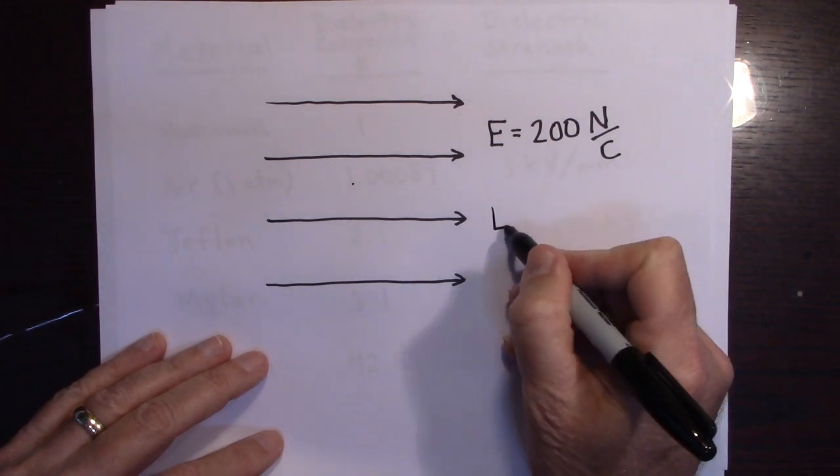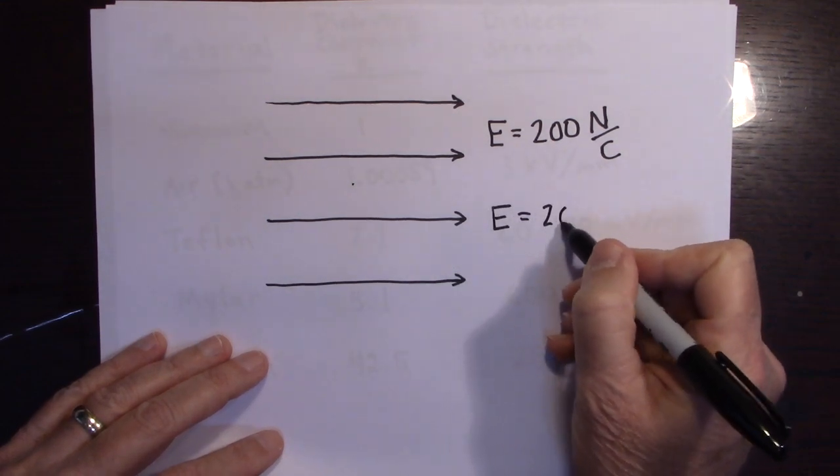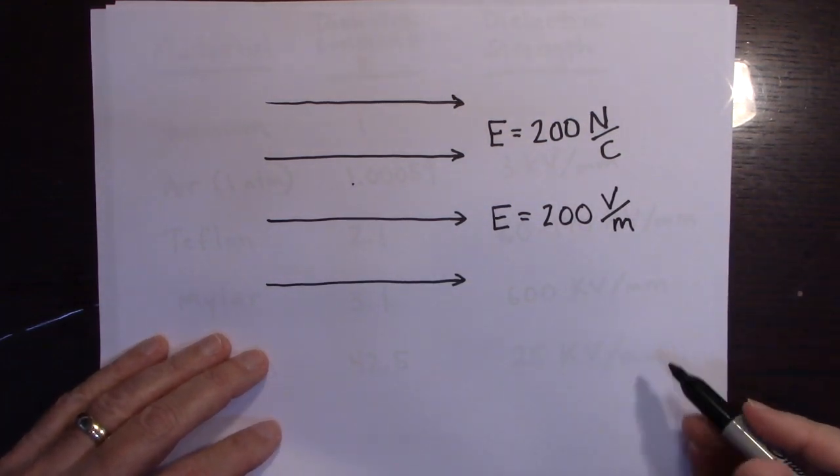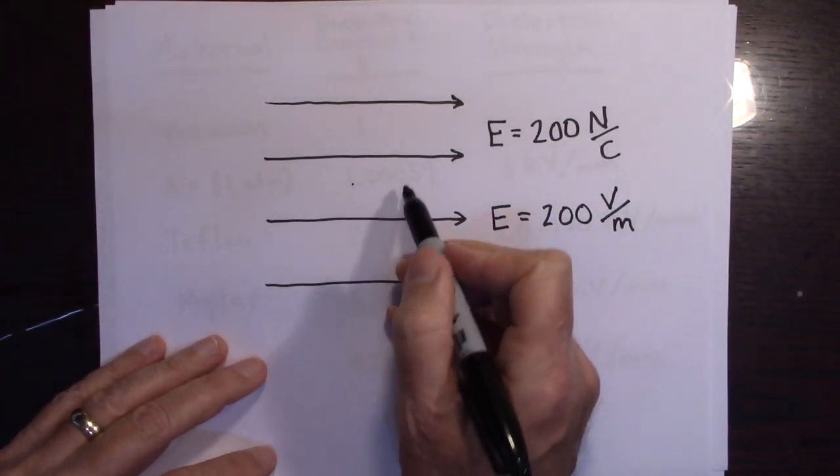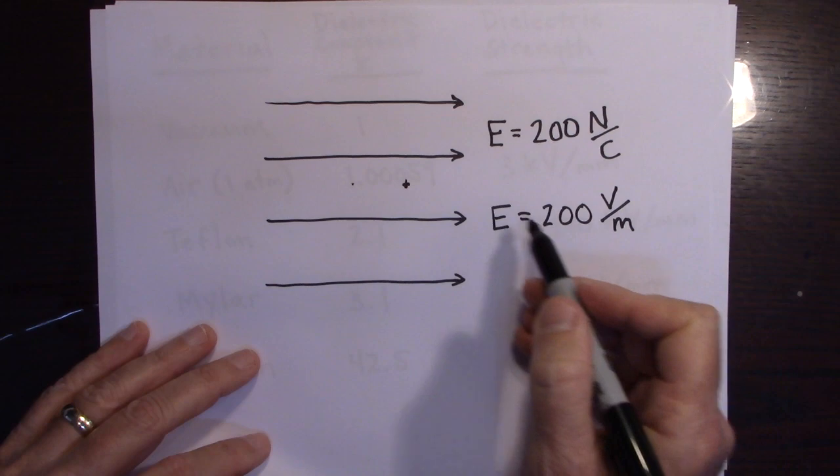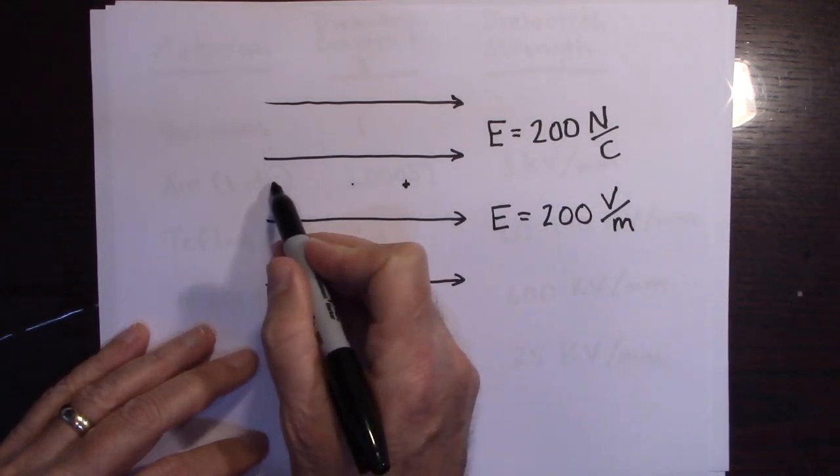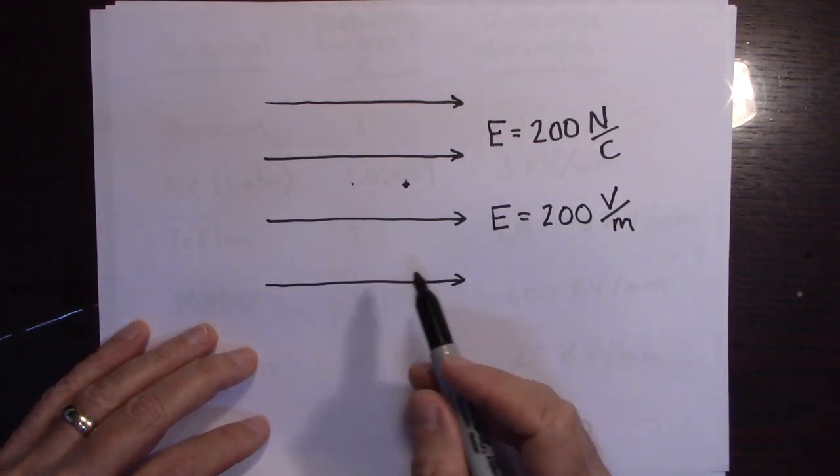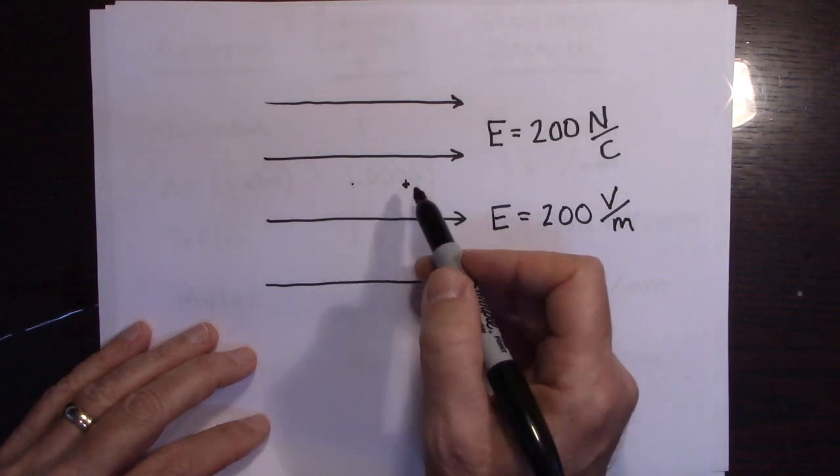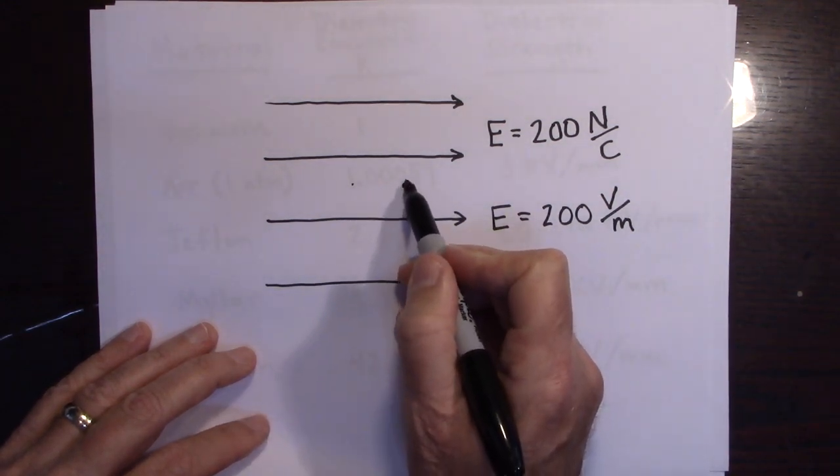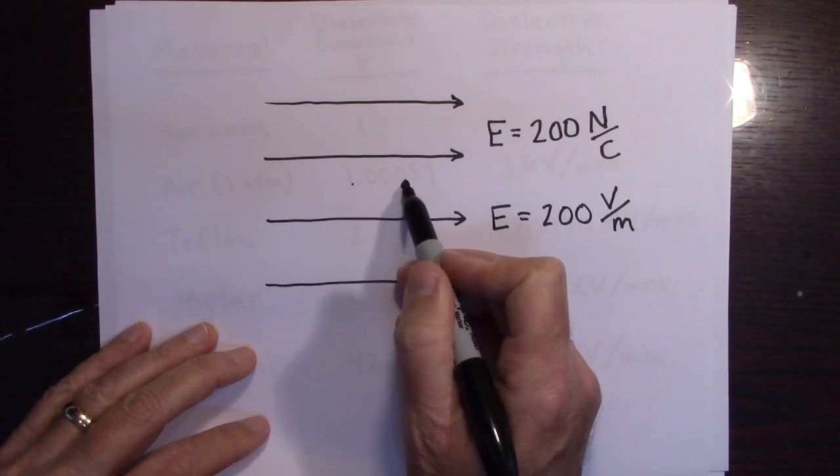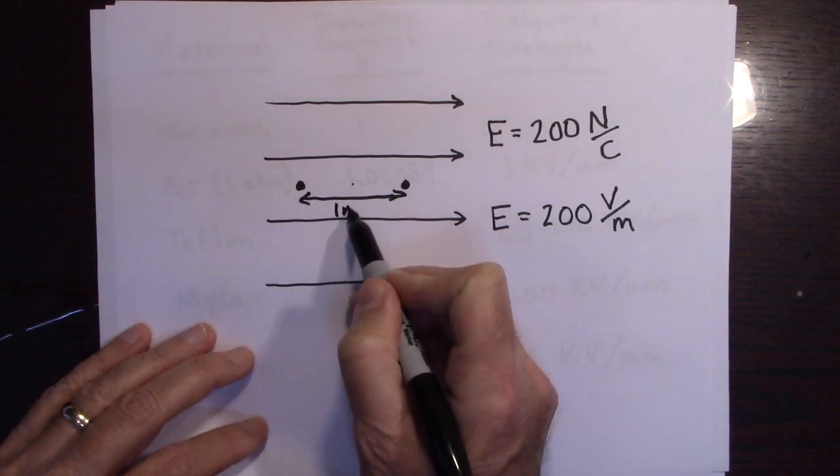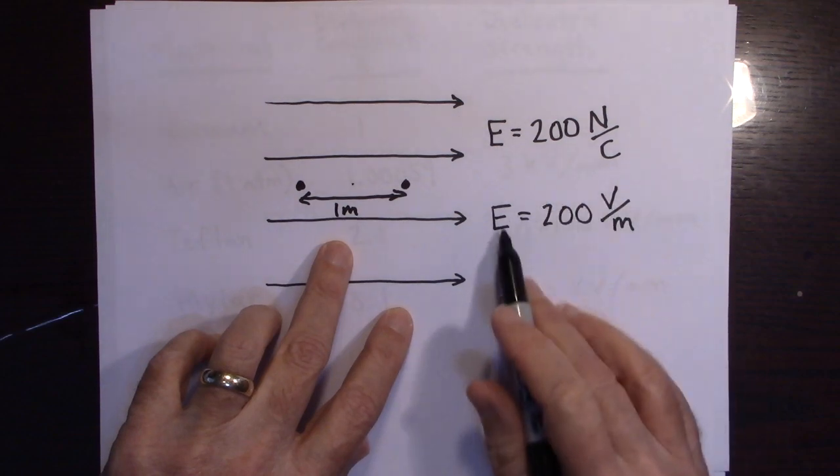But another way we designate field is we can say that it's 200 volts per meter. A way to look at that is that if I have two points, and they're a meter apart. Let's say this is a meter apart.